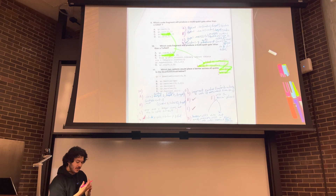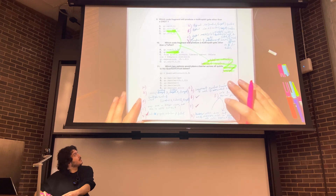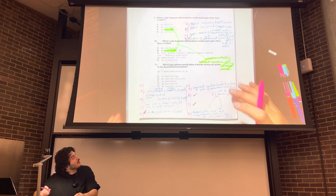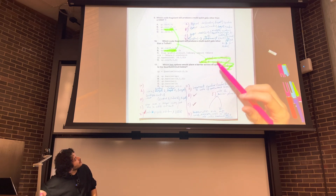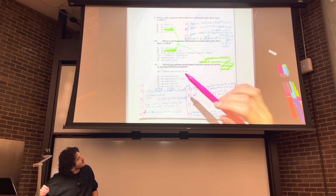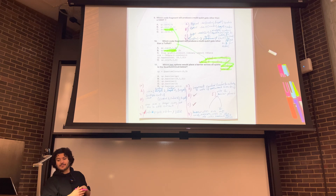Okay, question 11. Which two options would place a barrier across all qubits to the quantum circuit below? So again,